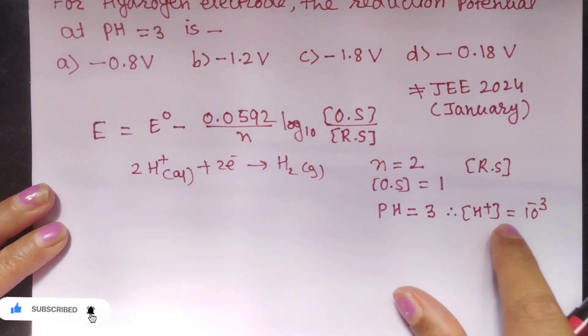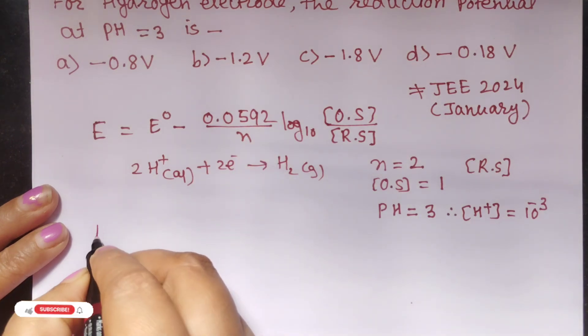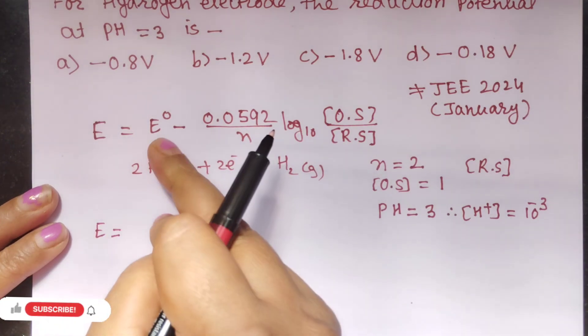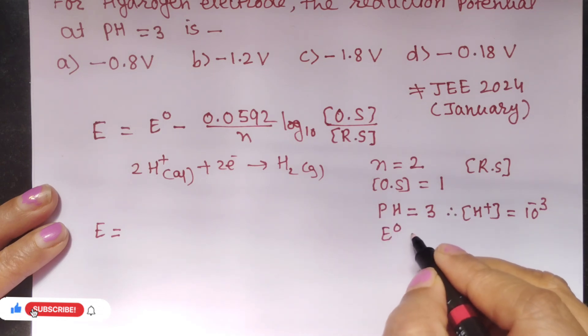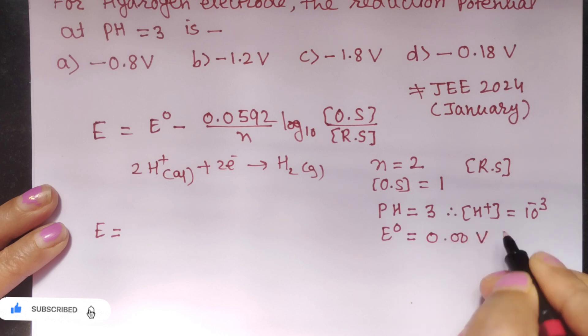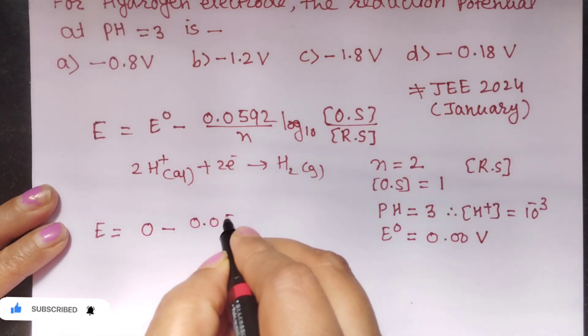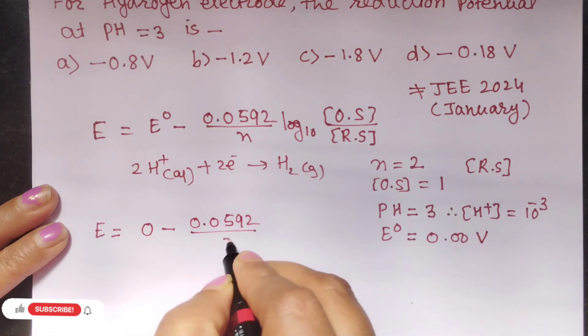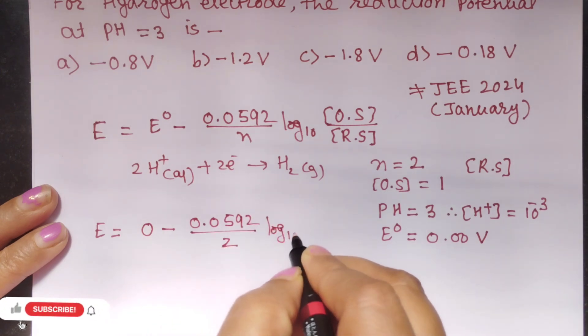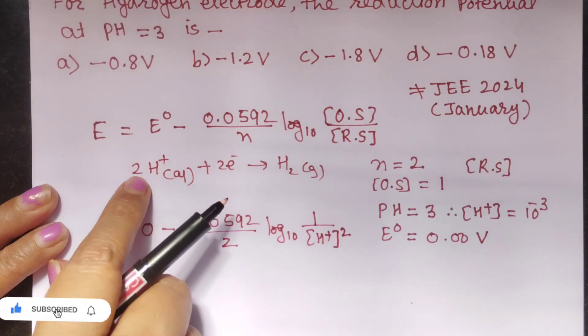So taking these values we will substitute that in the equation. So E is equal to, for this we need E standard also. Students you know that E standard for standard hydrogen gas electrode is always 0 volt. So that is equal to 0 minus 0.0592 upon 2 log to the base 10 of 1 upon H+ ion concentration. This will be squared because we have 2 moles.